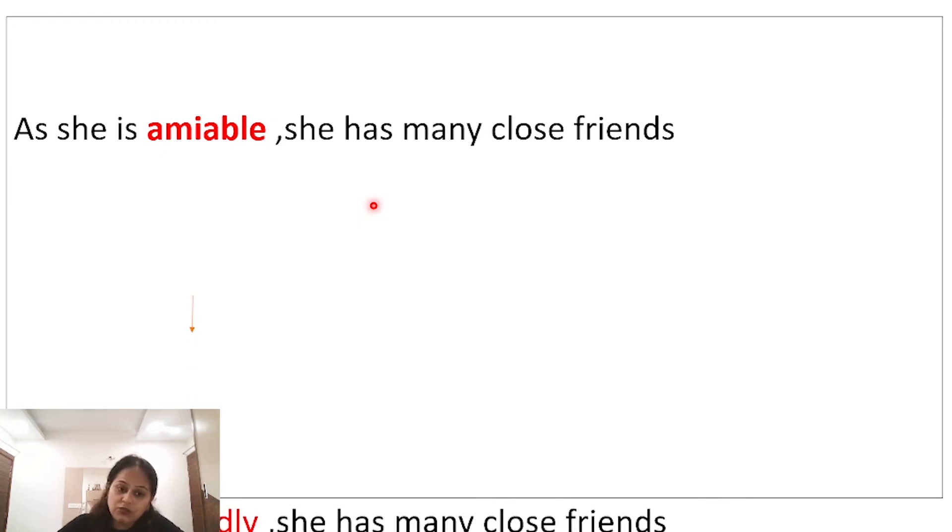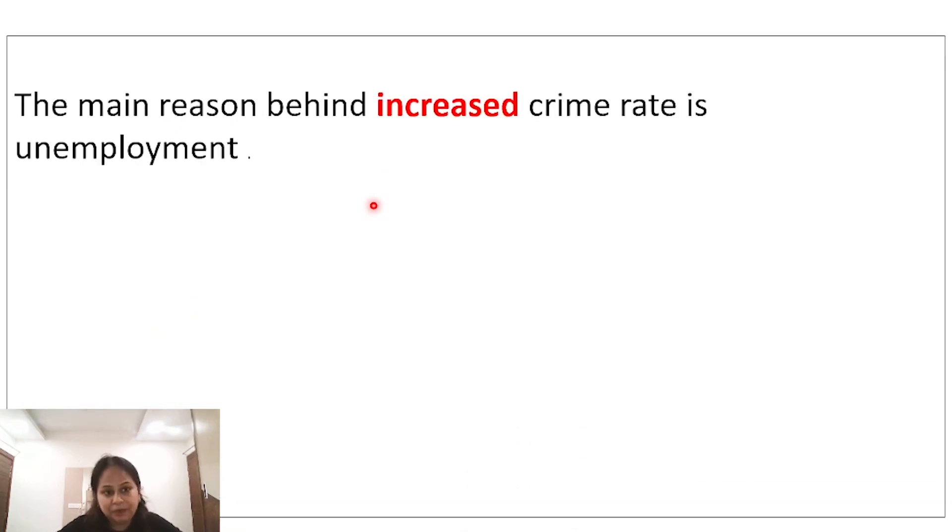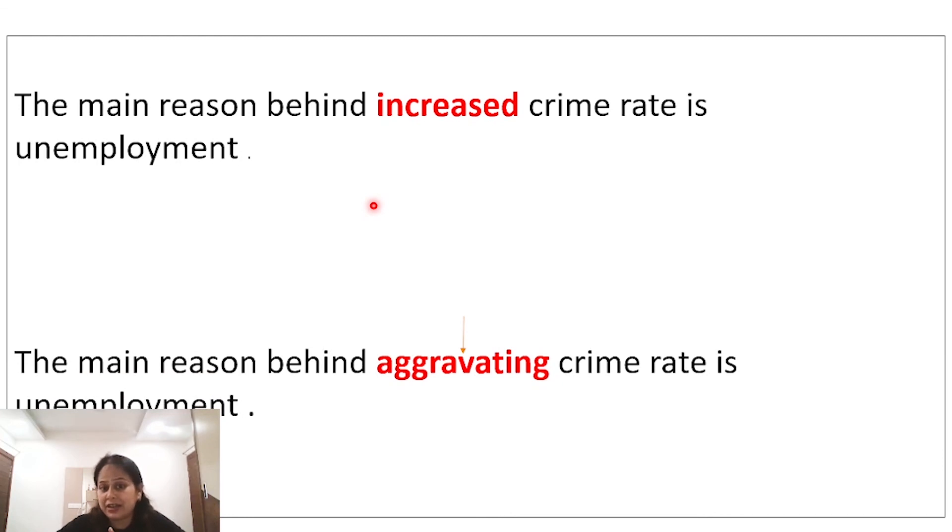The main reason behind increased crime rate is unemployment. Main reason behind aggravating crime rate. Jo bhi cheez jo negative way mein badhti hai, uske liye use karte hain aggravating.